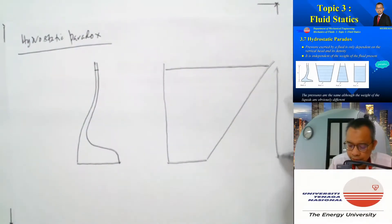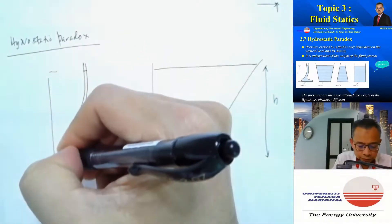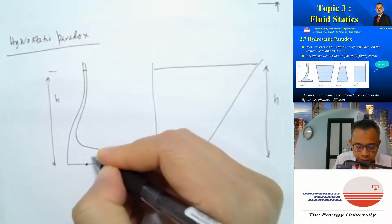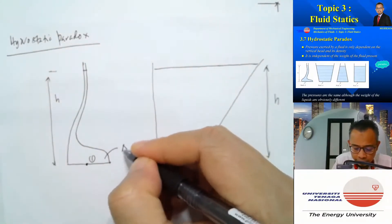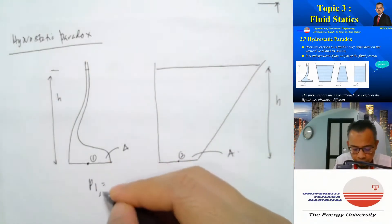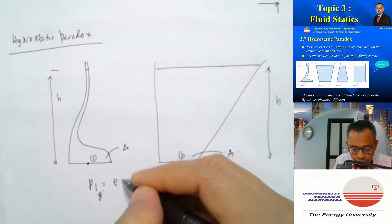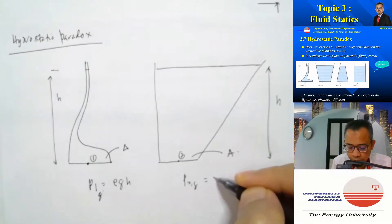So this is H and this is also H. So if we consider 0.1 and 0.2 here, so the area of this are the same, so p1 gauge is equal to rho g h and p2 gauge is also equal to rho g h.